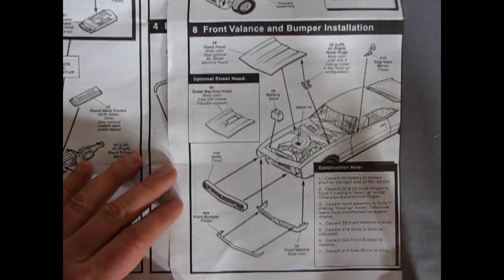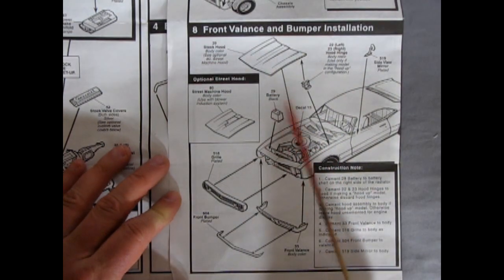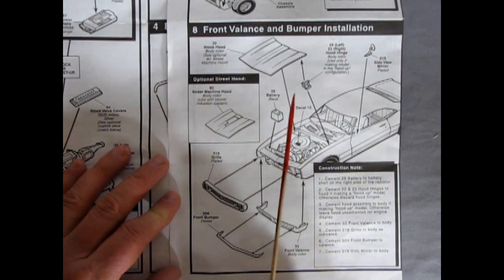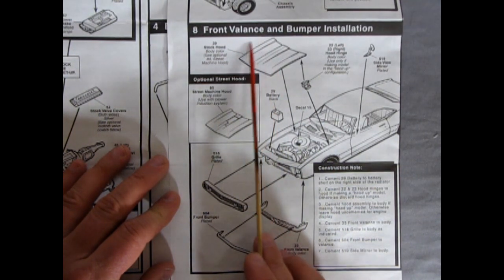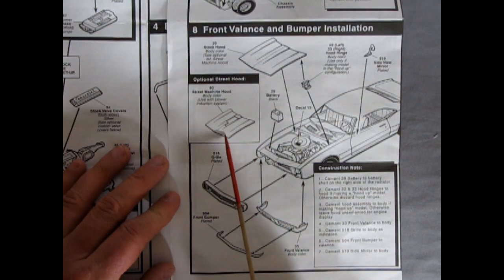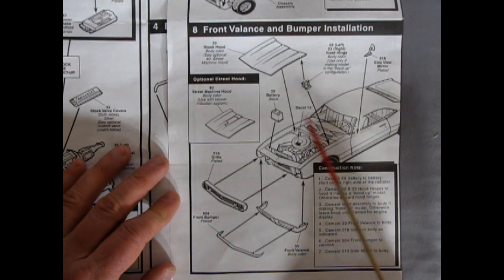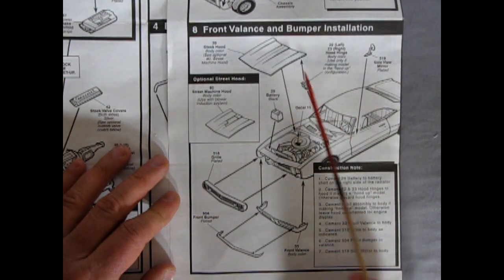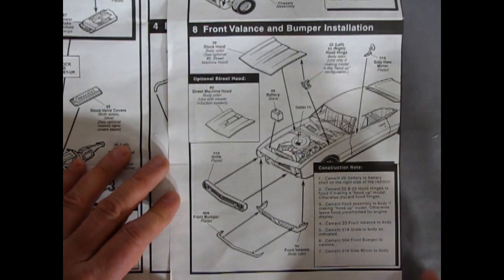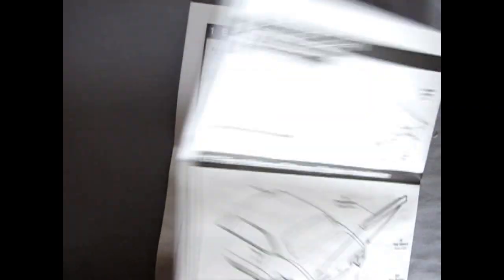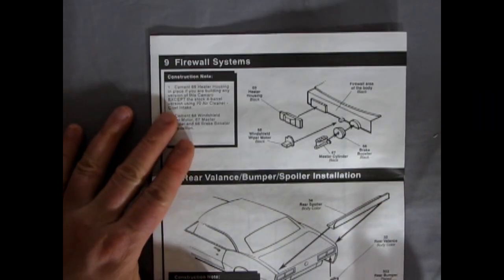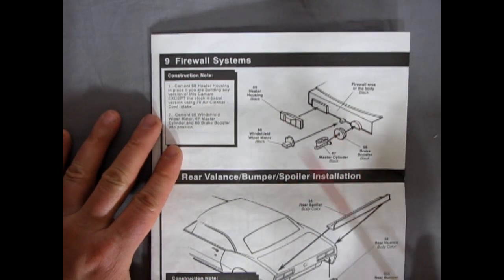I'm not sure on that. I do have one of these molded in orange that was a parts car. And I know that's early. But anyway, there's our stock hood. We also have a street machine hood with the pre-cut notch in there for your blower to pop through, your grill, your front valence, and the front chrome bumper, as well as the battery, hood hinges, and a side view mirror.